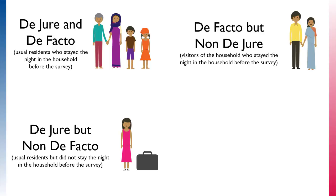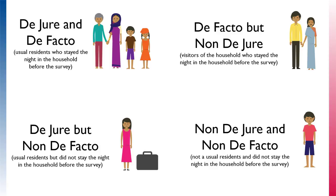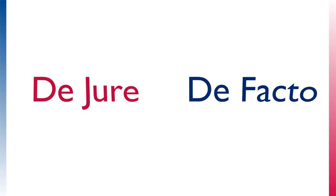However, if a person is non-de jure and non-de facto — meaning they are not a usual resident and did not stay the previous night in the household — they are not eligible to be interviewed as part of the DHS survey. These two classifications of household members are important because some indicators are only calculated for de jure or de facto residents.